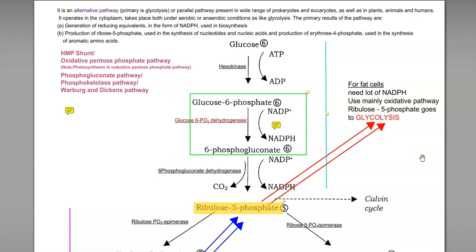In this screencast video lecture we are going to see about the pentose phosphate pathway, which is commonly regarded as an alternative pathway. In any organism, glycolysis serves as a primary pathway, and pathways like the ED pathway and pentose phosphate pathway are considered alternative. Under certain conditions they can also function parallel to the primary pathway. They are found distributed in a wide range of prokaryotes, eukaryotes, as well as plants, animals, and even the human system. This pathway operates in the cytoplasm and takes place under both aerobic and anaerobic conditions.